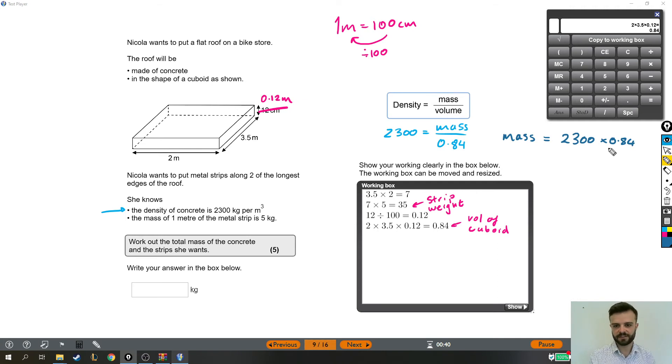Another way of thinking about it is that that density is how much a meter cubed would weigh. But I don't have a whole meter cubed. I've only got 0.84 meters cubed. So it's going to weigh 0.84 times as much. And the way I just described it now is how it makes more sense to me. I don't have a whole meter cubed. I've only got 0.84 meters cubed. So it weighs 0.84 lots of what a meter cubed would. So it's 0.84 times 2300.